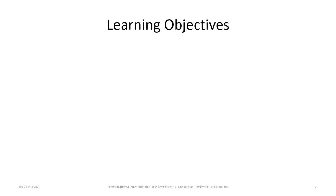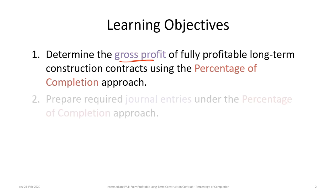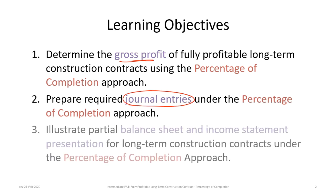This tutorial has three main learning objectives. The first is to determine the gross profit of fully profitable long-term construction projects using the percentage of completion approach. The second objective is to prepare journal entries to recognize revenues, costs, and gross profit under the percentage of completion approach. And finally, to prepare partial balance sheet and income statements to show the presentation for construction contracts under the percentage of completion approach.